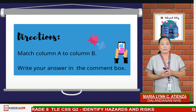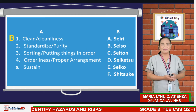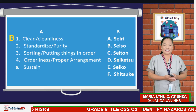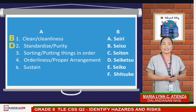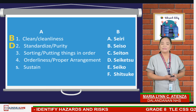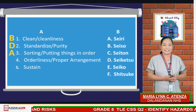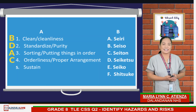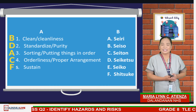This time, you're going to match column A with column B. Write your answer in the comment box. Number 1: cleanliness. The answer is Seiso, letter B. Number 2: standardized. The answer is Seiketsu, letter D. Number 3: sorting. The answer is Seiri, letter A. Number 4: orderliness. The answer is Seiton, letter C. And number 5: sustain. The answer is Shitsuke.